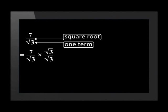To rationalize the denominator we have to multiply the fraction with the square root of 3 over the square root of 3. By doing this we rationalize the denominator and we get an answer of 7 root 3 over 3.